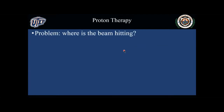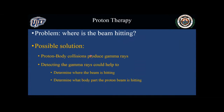But there is a problem: how do we know where the beam is hitting? Is it exactly where we want it to be? A possible solution is that when the protons collide with the body parts, among other things they can produce gamma rays. And the gamma rays, if we capture them, we could — by geometry — find where the beam is hitting, where the gamma rays are being produced. This second part is a more detailed analysis of how we can learn about what kind of body part the proton beam is hitting.